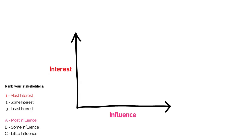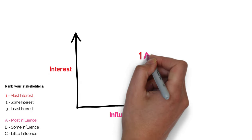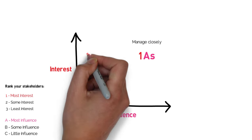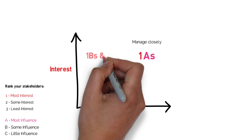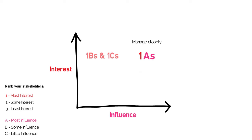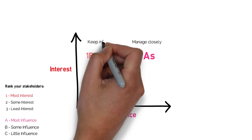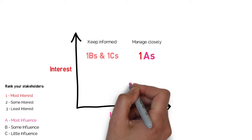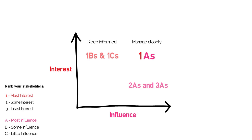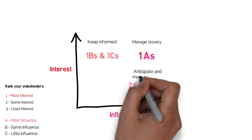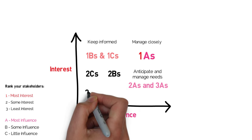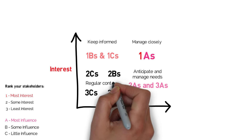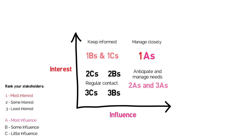If they've got a one and an A, that means they fall in the manage closely quadrant. If they've got a 1B or a 1C, that means we need to keep them informed. If they've got a 2A or a 3A, we need to anticipate and manage their needs. And if they've got a 2C, a 2B, a 3C, or a 3B, then we need to keep in regular contact with them.